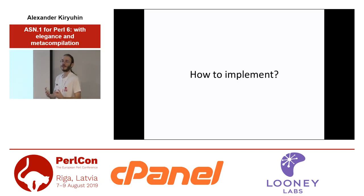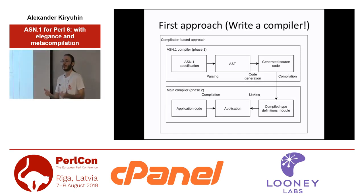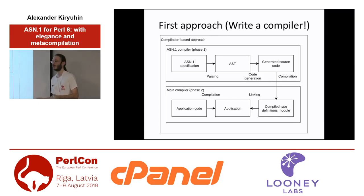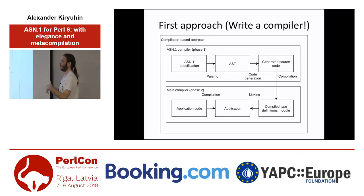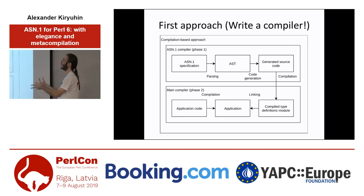So how do you implement support of ASN.1 in some particular language? Basically you have two common approaches. The first approach is simply — well, not simply — just write a compiler. So now you have two compilers and you have twice the problems. Your first compiler, the ASN.1 one, it takes your textual specification, creates an abstract syntax tree, and then generates some source code of your high-level language, for example C.